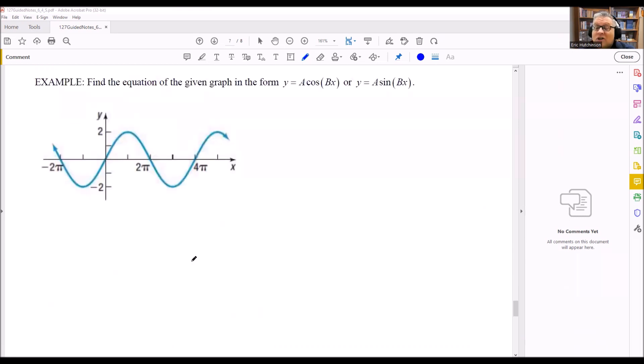So this one is going to be a sine graph because it crosses through the origin. So we know that much is true. Now, next thing we have to do is figure out what the B is. The B involves the period.